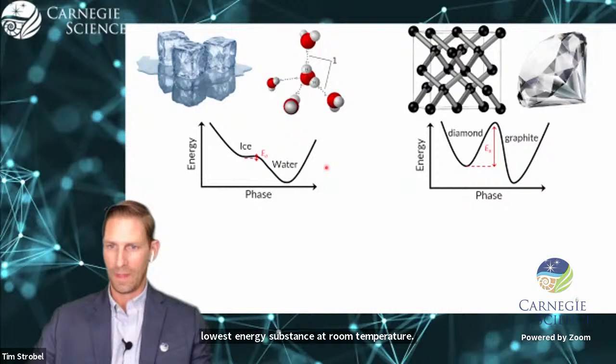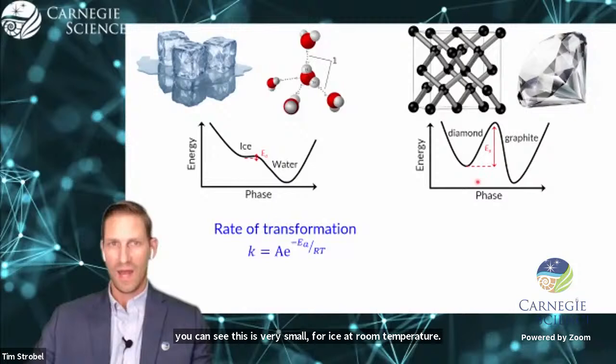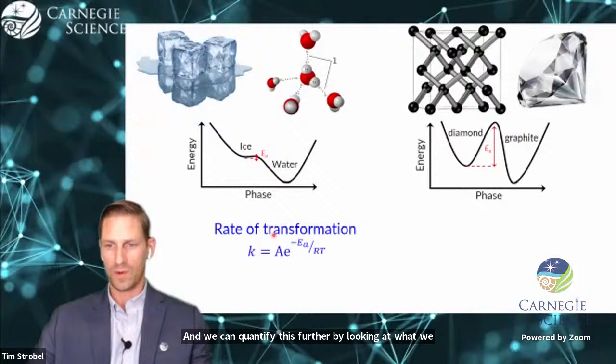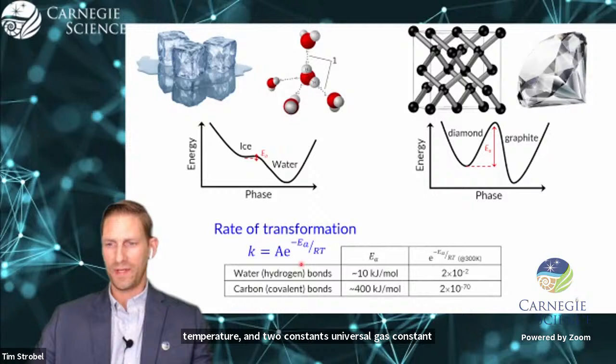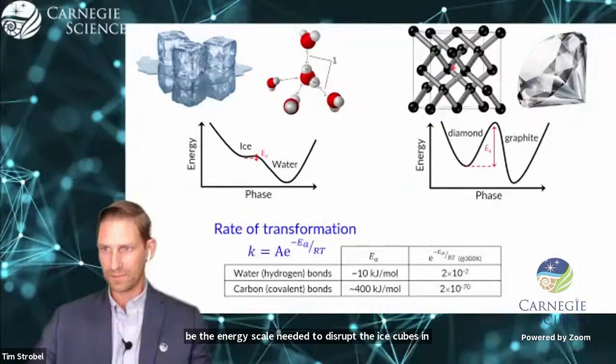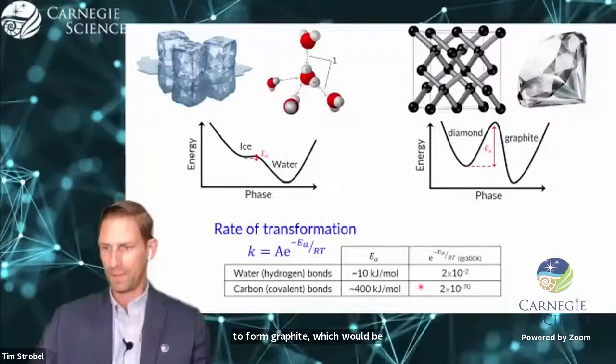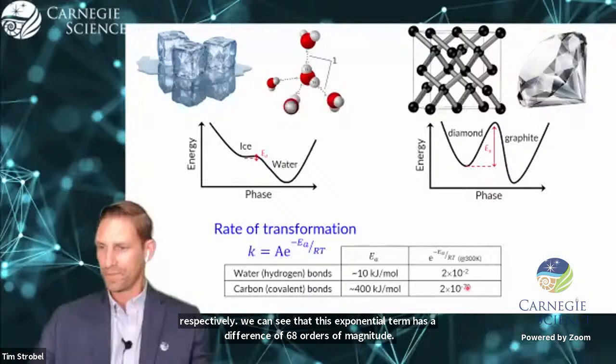Whereas diamond has to overcome a large barrier to find graphite, despite the fact that graphite is in fact the lowest energy substance at room temperature. We call this barrier an activation energy. We can quantify this further by looking at what we call the rate of transformation or a chemical rate constant, which has exponential dependence on the activation energy and temperature.